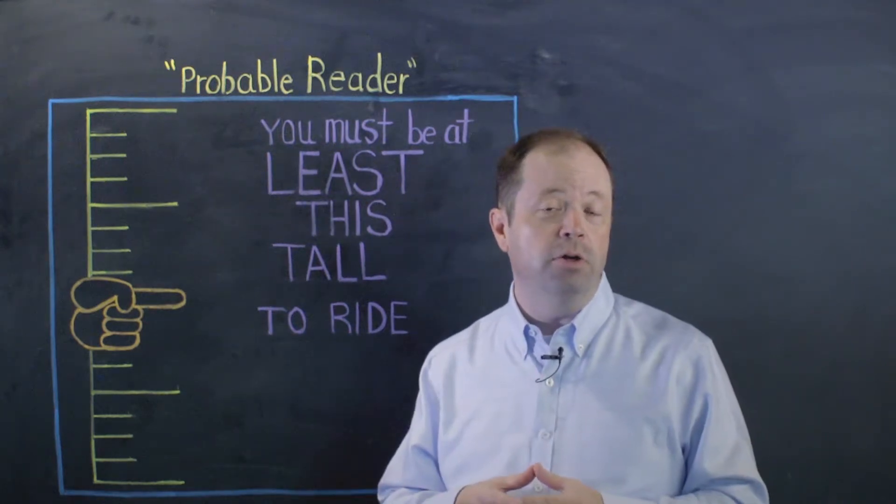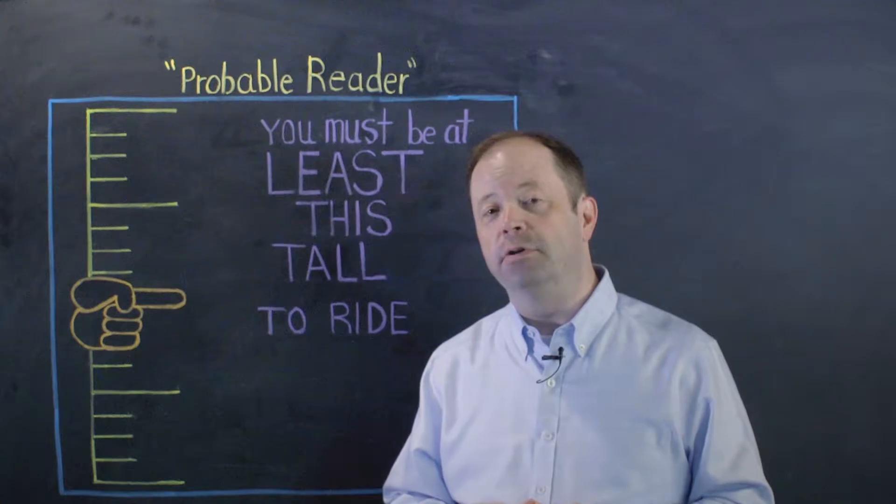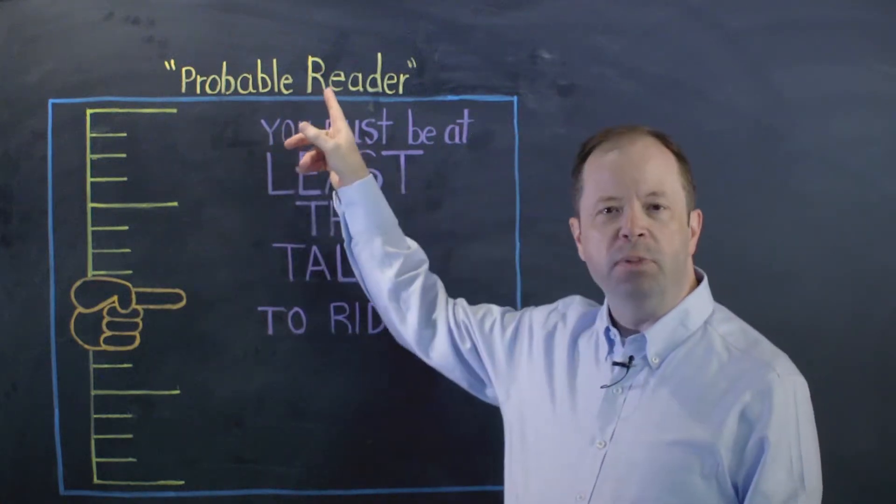And the answer is pretty straightforward. On your reports within STAR early literacy, look for the heading, Probable Reader.